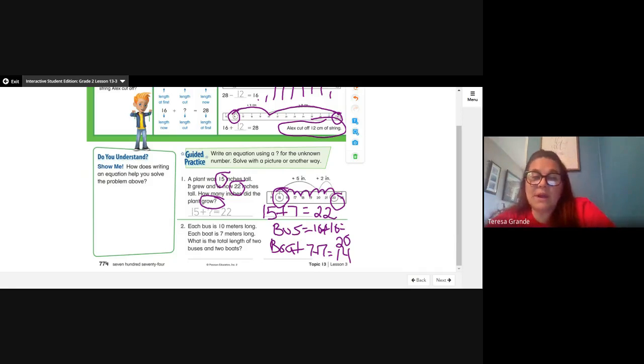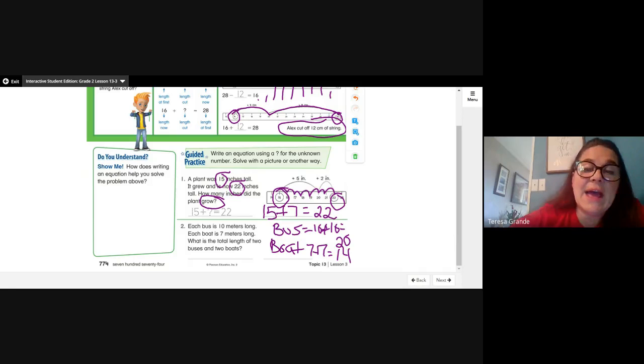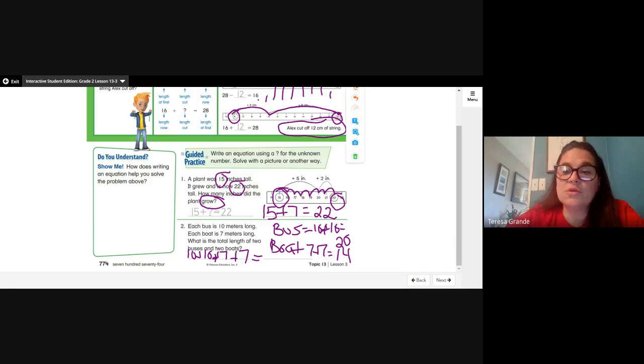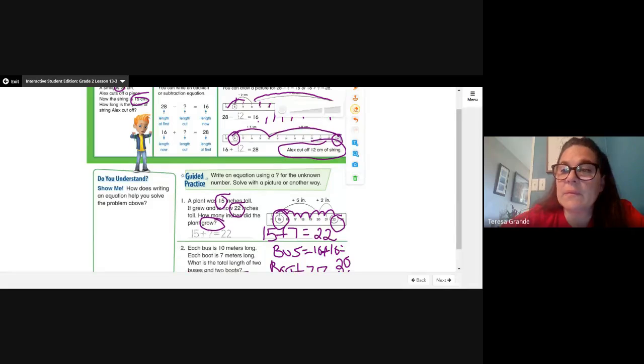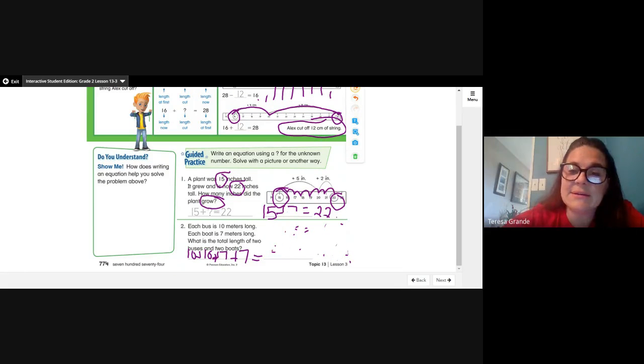In order to write an equation, we need to write 10 plus 10 plus 7 plus 7 equals what. So 20 plus 14 equals what. Let's give ourselves a little more room. I told you before we need to try to keep everything organized. We have 20 plus 14 equals what. 0 plus 4 is 4, 2 plus 1 equals 3, for an answer of 34 meters.